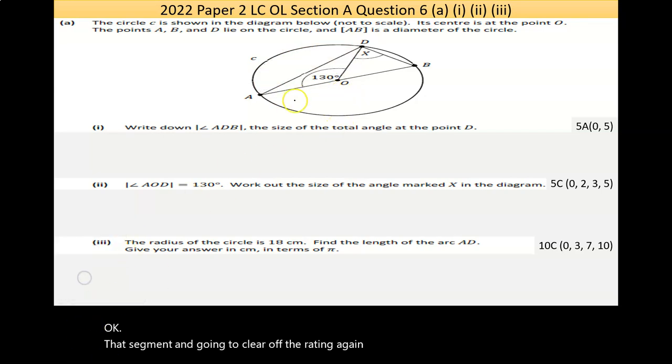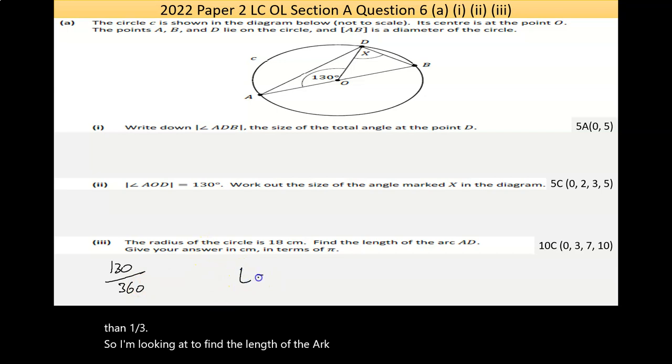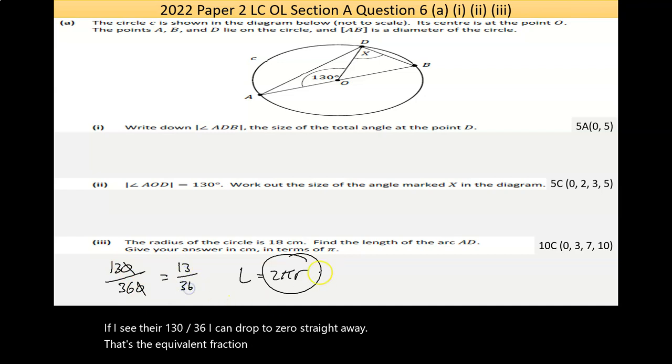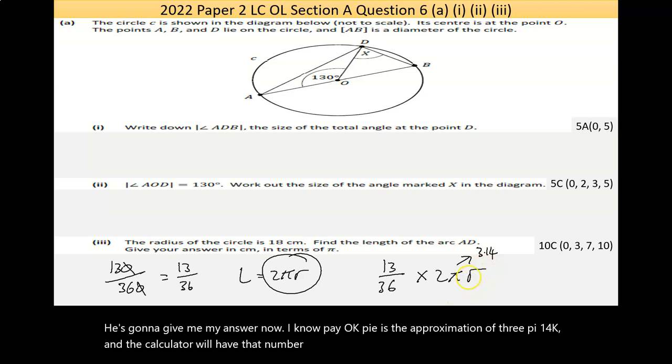If this is 18 and this is 18, I'm trying to find the length of this segment here. That segment is 130 out of 360 of the circle. There's a fraction there: 130 over 360, that's not quite a third. The length of a circle is 2πr, so this fraction times 2πr will give my answer.